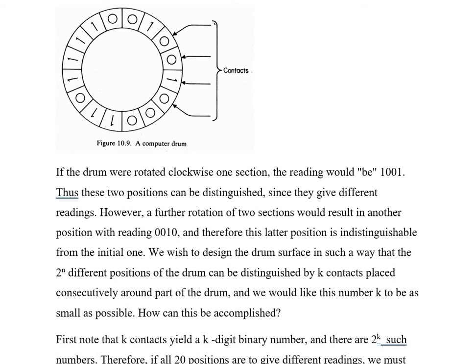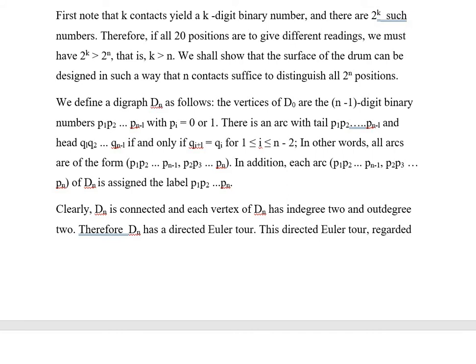We wish to design the drum surface in such a way that the 2^n different positions of the drum can be distinguished by k contacts placed consecutively around part of the drum, and we would like this number to be as small as possible. How can this be accomplished? First note that k contacts yield a k-digit binary number, and there are 2^k such numbers. Therefore, if all 2^n positions are to give different readings, we must have 2^k ≥ 2^n, that is k ≥ n. We shall show that the surface of the drum can be designed in such a way that n contacts suffice to distinguish all 2^n positions.